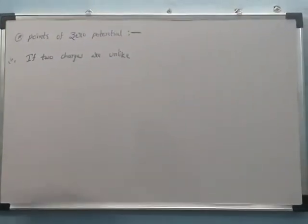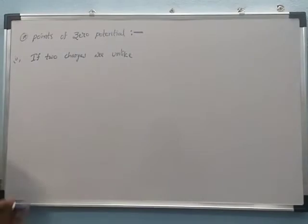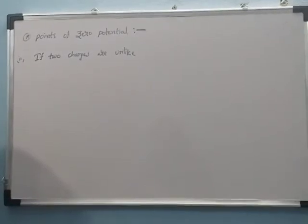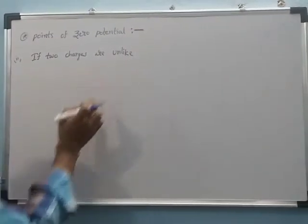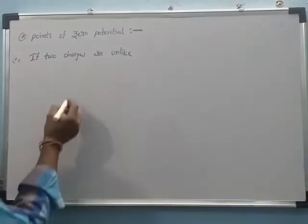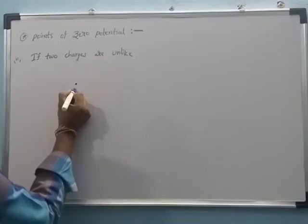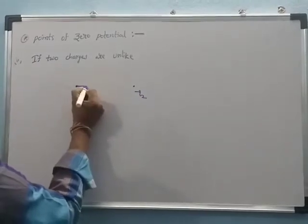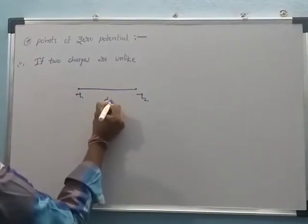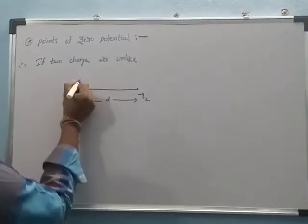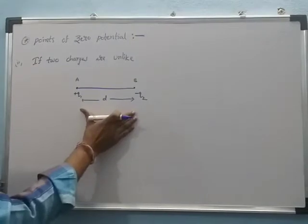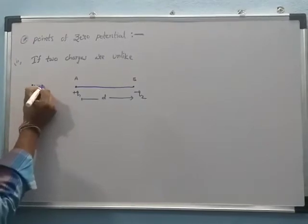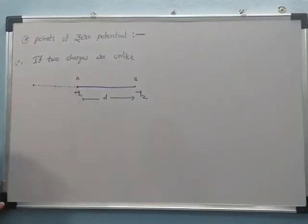Now the second condition: if two charges are unlike — one is positive charge and one is negative charge. Consider Q1 is a positive charge and Q2 is a negative charge, separated by a distance D, placed at points A and B respectively. When the two charges are unlike, the resultant electric potential equal to zero is formed outside of the two charges.